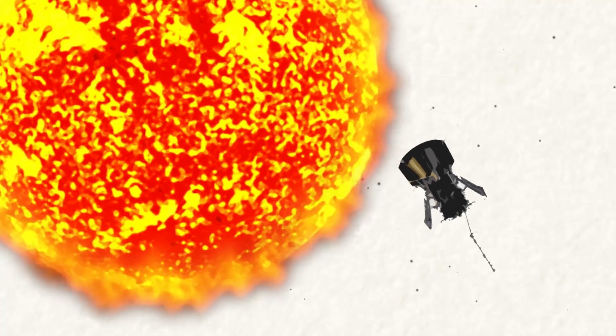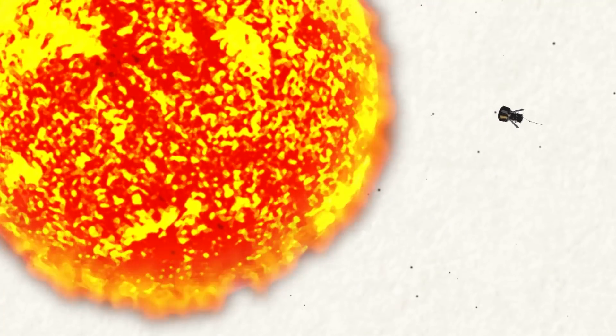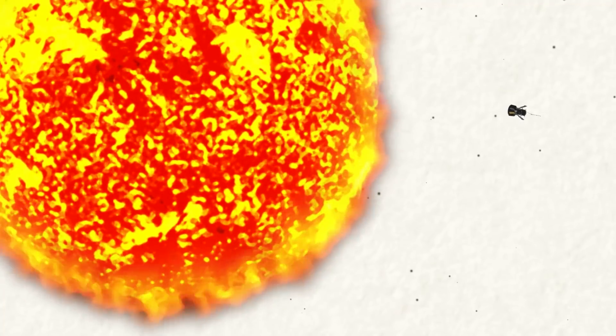NASA's Parker Solar Probe will soon fly closer to the Sun than any spacecraft before it, about 4 million miles from the visible surface. But getting that close to the Sun requires some fancy orbital mechanics.